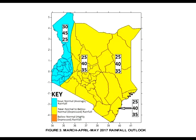The expected rainfall distribution for the March to May 2017 seasonal rainfall, both in time and space, is expected to be generally poor over most parts of the country. This will be more so over the eastern sector, and in particular the arid and semi-arid lands. Highly depressed rainfall is expected over most parts of the country during the month of March.